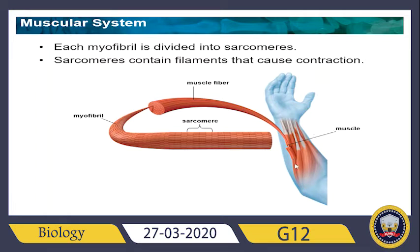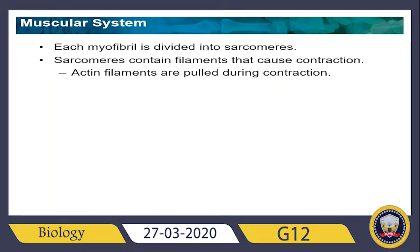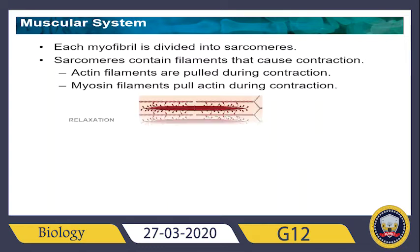To recap: the muscle is composed of muscle fibers, muscle fibers are composed of myofibrils, myofibrils are composed of sarcomeres, and inside the sarcomere we find actin filaments that are pulled during contraction. Myosin filaments pull actin during contraction.